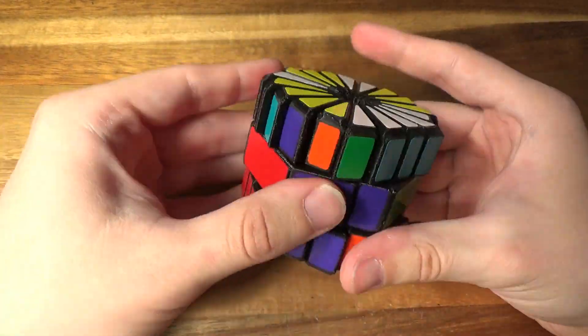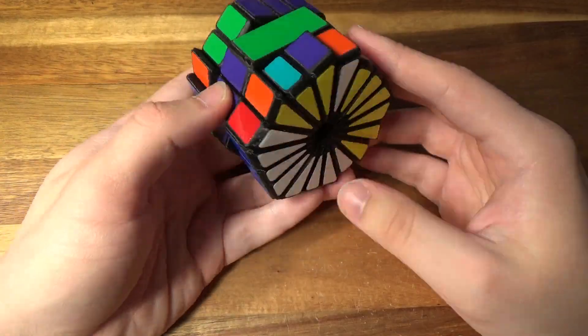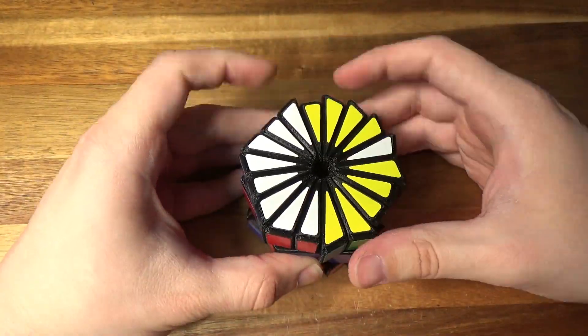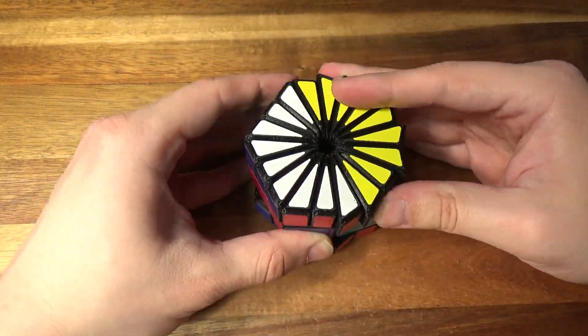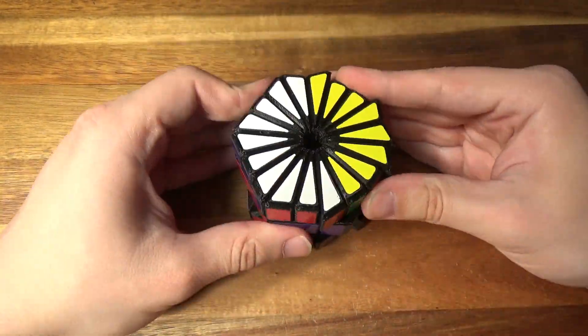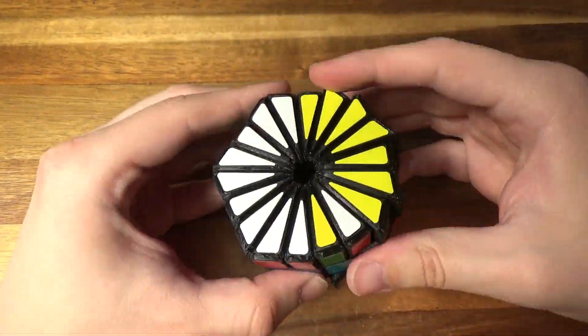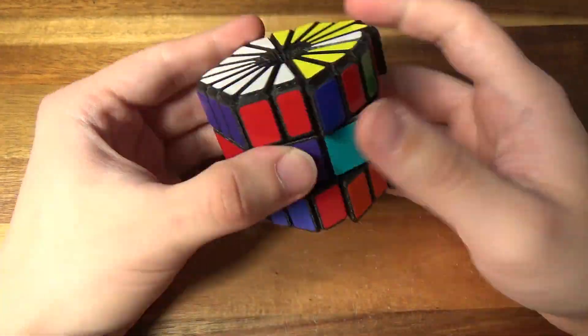I feel like normally when I solve puzzles, this is when I would reach the limit of what I can do intuitively, and I would have to either look up an algorithm or figure something out myself. But with this specific puzzle, I guess geometrically, it just works out, because I ended up actually being able to solve the entire top layer intuitively.